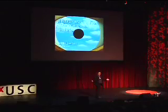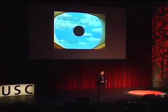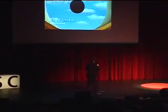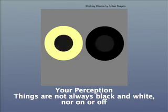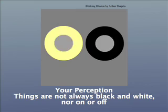This will be an interactive talk, so I will encourage the interaction of the audience. As we'll see in our perception, not everything is black and white, nor is everything on or off. The audience on this side, when the inner circle is white, say 'on,' and the other side of the audience, when this is white, say 'on.' Everybody together, go.